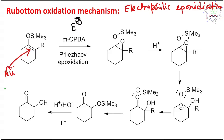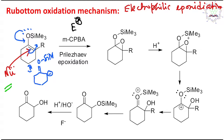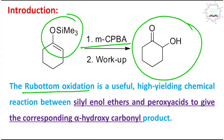A simple question: if you compare a simple alkene versus this silyl enol ether, who is more reactive? Obviously, the silyl enol ether is more reactive. Why? Because this silyl enol ether has a canonical form — it can open and ultimately produce a canonical form where the negative charge is on the carbon and the oxygen carries a positive charge. This means this double bond is an electron-rich double bond. That's why MCPBA-mediated epoxidation happens smoothly, making Rubottom oxidation a high-yielding reaction between silyl enol ether and peroxy acid.